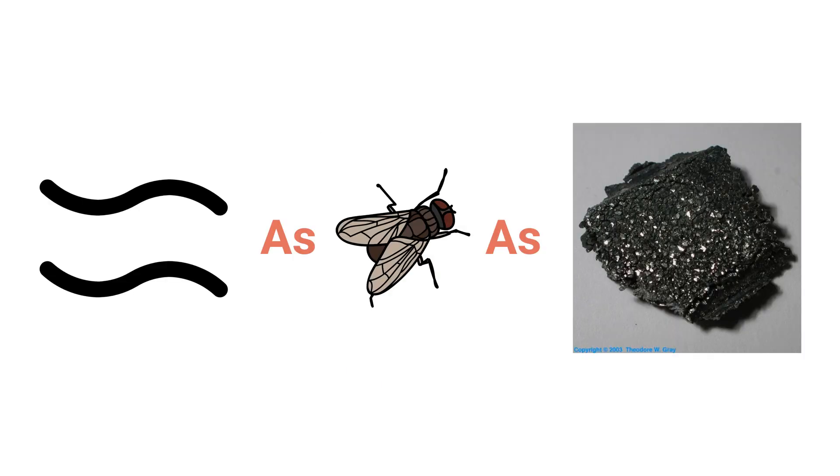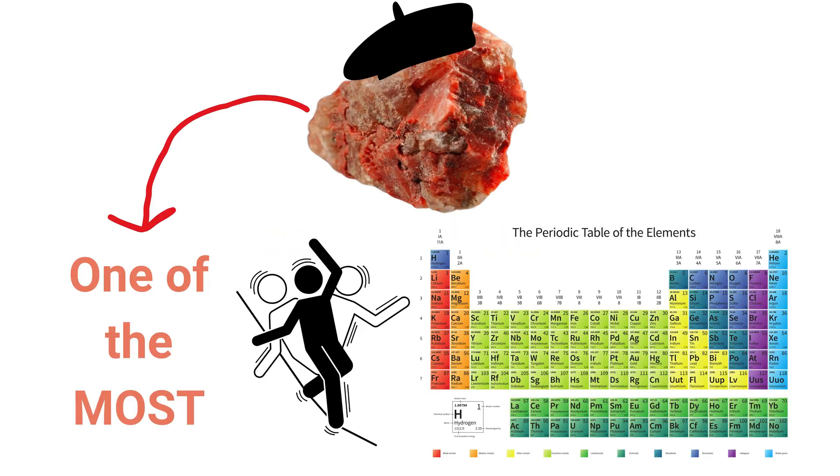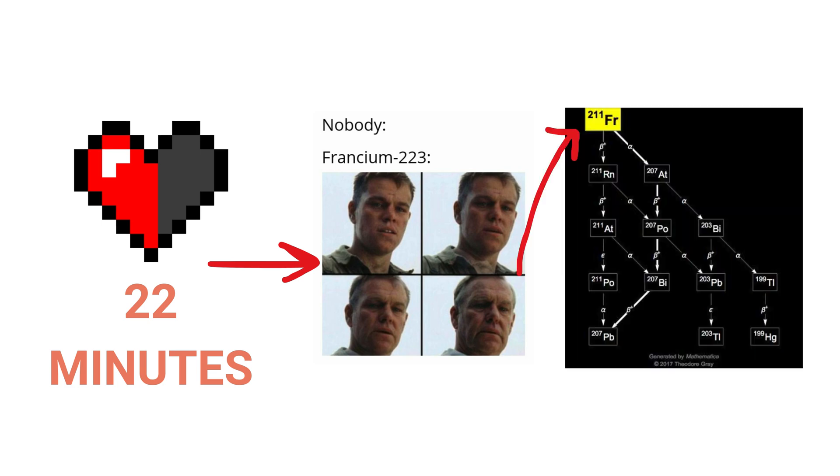Francium. Almost as elusive as astatine, francium is one of the most unstable elements known. With a half-life of only 22 minutes, francium decays almost immediately into other elements.